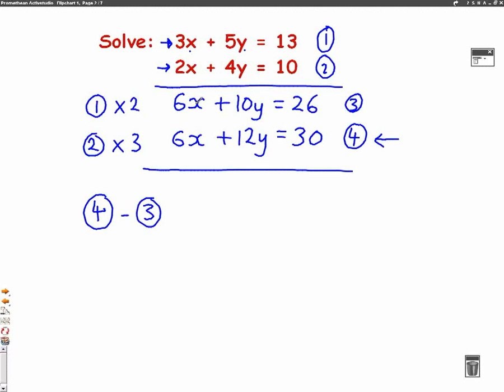So let's do this in columns. Starting at the number 4, which is the bottom one, we're doing 6x, take away the 6x above it. Well, that's 0. That cancels out. 12y, take away 10y. Well, that leaves us with 2y. Equals, if you do 30, take away 26, you'll get an answer of 4. So if 2y equals 4, if we divide both sides by 2, then we know that y on its own, 4 divided by 2 is 2. So y is 2. That's one of the answers.